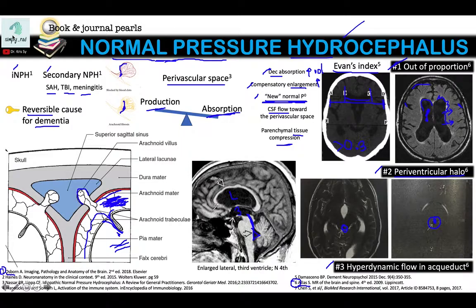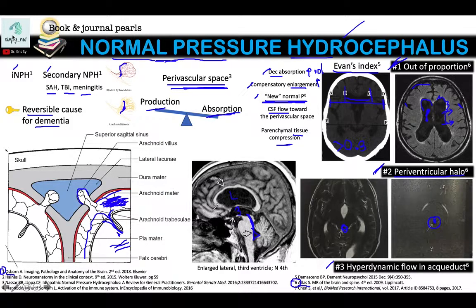Those are the findings for normal pressure hydrocephalus. It's important to understand the concept of the perivascular space and the cascade which leads to these three important MRI findings.